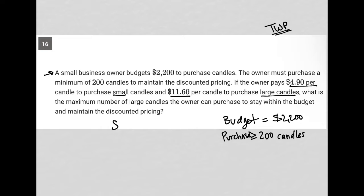We know that S plus L, small plus large candles, has to be greater than or equal to 200, right? Because that's what this means. If we want to maintain discounted pricing, we have to buy at least 200. We don't know how many small or how many large, but in total, the number of small plus the number of large has to be greater than or equal to 200.